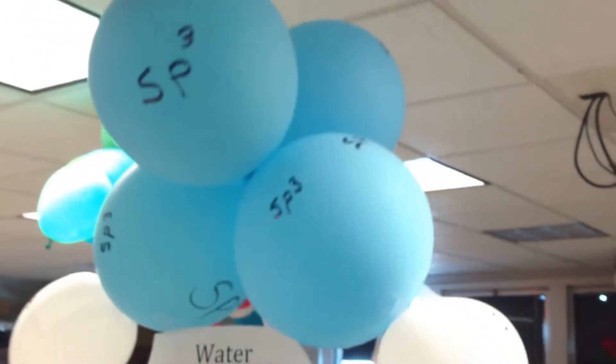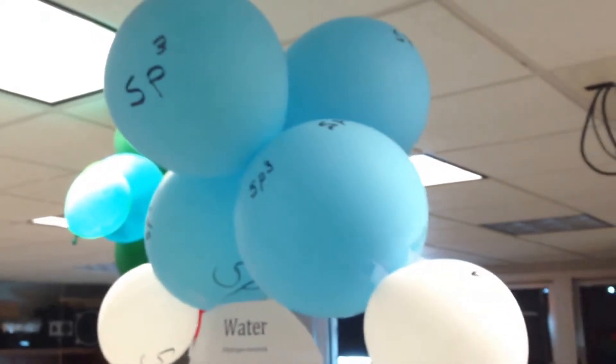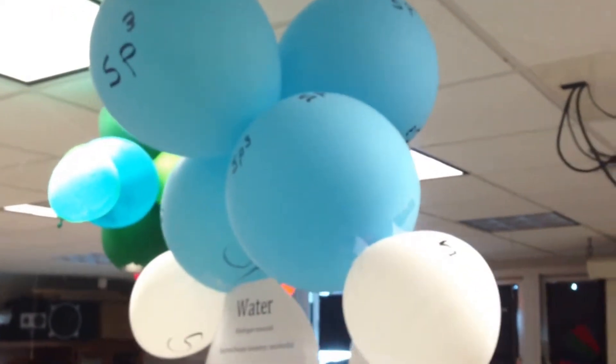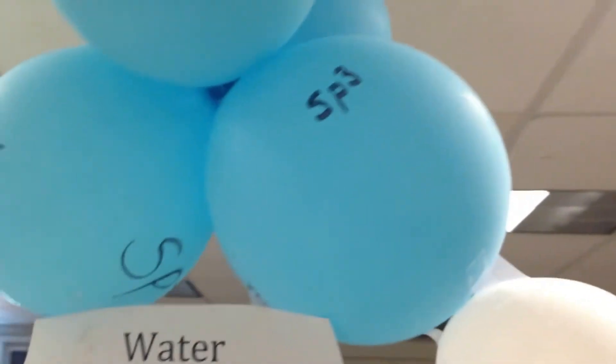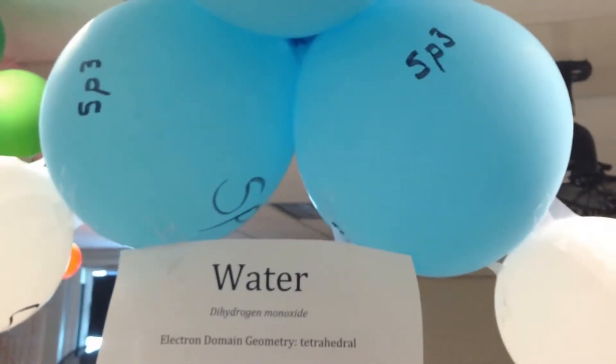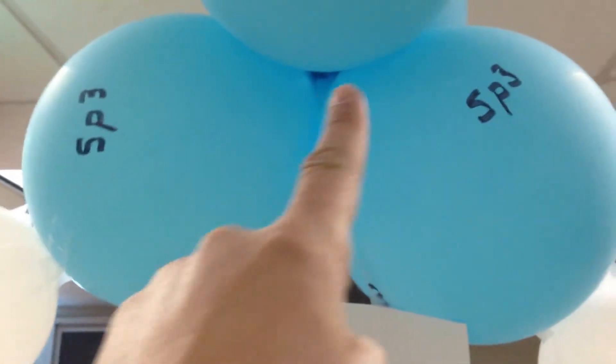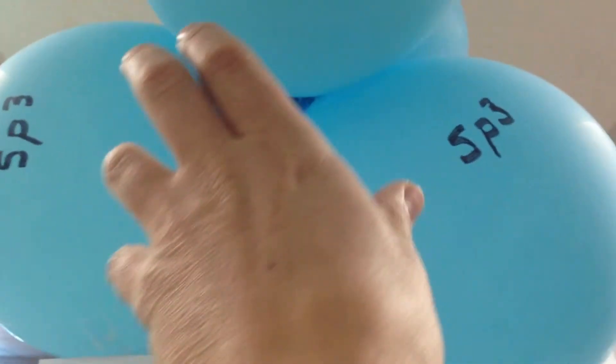That's how water looks. The two lone pairs up top, we don't consider in terms of molecular geometry, but because of the two lone pairs, they bend down those two other sp3 bonded sigma bonds here into a very asymmetrical shape, and you would have the more electronegative atom pulling electrons up, making a polar molecule, negative part on this side, positive part where the H is.